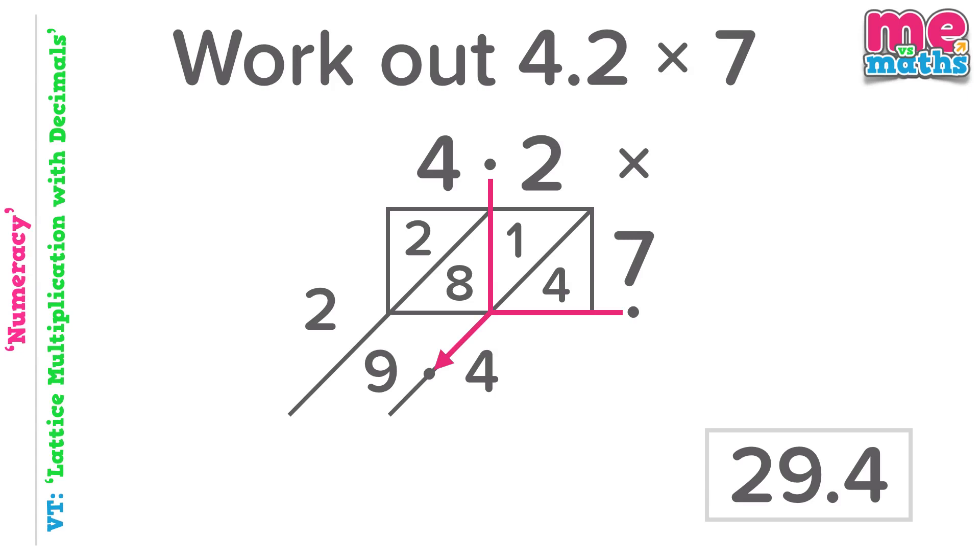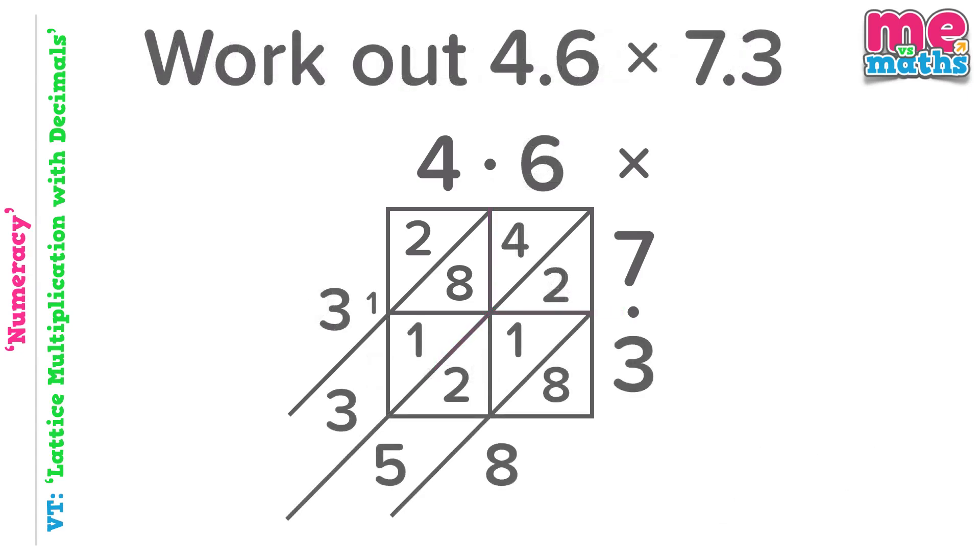Okay, we're going to look at a few more examples but our grids will already be filled in. We're just going to be looking at where the decimal points go. So here we're looking at 4.6 times 7.3 and I filled the grid in already as I just stated, so we're going to focus in on the decimal points here and here.